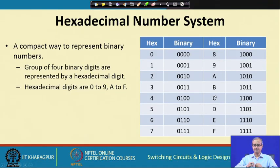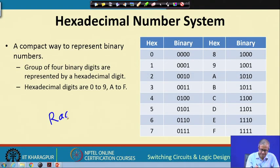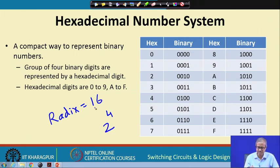Now let us come to hexadecimal, which goes one step further. Octal uses radix 8; hexadecimal uses radix 16. In the octal case we grouped 3 binary digits to form one octal digit; now we will group 4 binary digits or bits to form one hexadecimal digit. So hexadecimal will be even more compact in terms of number of digits. The radix 16 is again a power of 2, which makes binary-to-hexadecimal conversion easy.